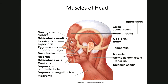Muscles of mastication: your masseter is one of them, right here. The temporalis is actually involved in chewing — it comes down in here. Then there's the buccinator. These are all involved in mastication, or chewing.